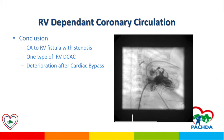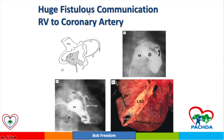It can also cause fistula formation between the RV cavity and the coronary artery, which can involve either the right coronary artery or the left coronary artery. In this case, we have the left anterior descending coronary artery connection to the right ventricle. An anatomical specimen shows a huge fistula formation between the LAD and the right ventricular apex.